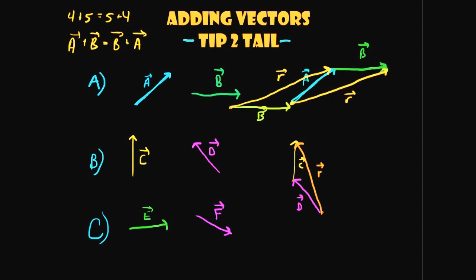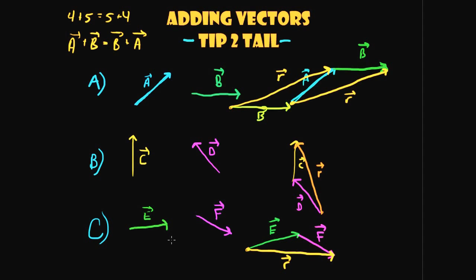For the third example, vector E comes out at a relatively low angle from the x-axis, and vector F is heading down. We'll add vector F here due to space. Tip-to-tail: we put the tail at the tip of E. Here's the tail, we attach the other vector — tip to tail — and to draw the resultant we go from one tail to the other tip. That line is our resultant vector for this third example.